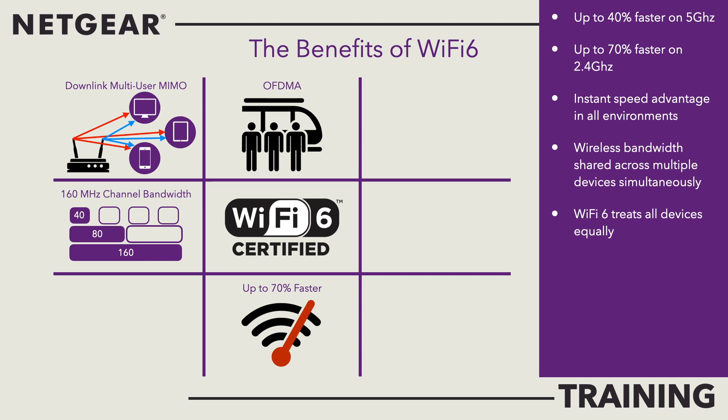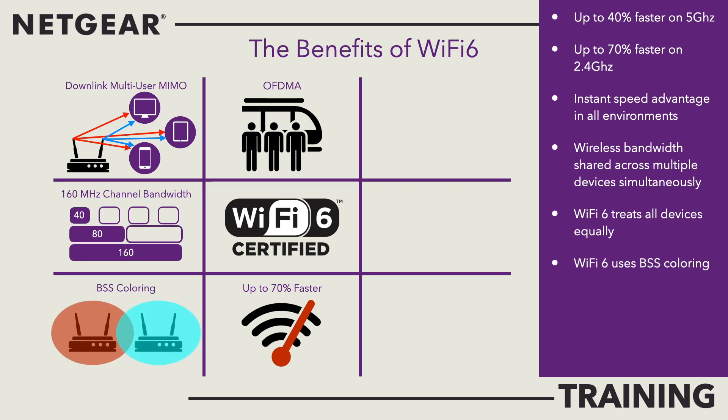Wi-Fi 6 uses a feature called BSS colouring. This pre-negotiates the channels that wireless networks will use, based on the location and signal strength of adjacent access points or mesh systems. This minimises interference, lowers congestion, and maximises channel efficiency. Depending on the base station signal, Wi-Fi 6 can choose what to transmit or defer, and this makes a significant difference to the overall performance.